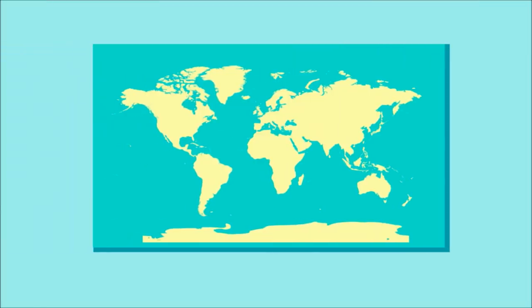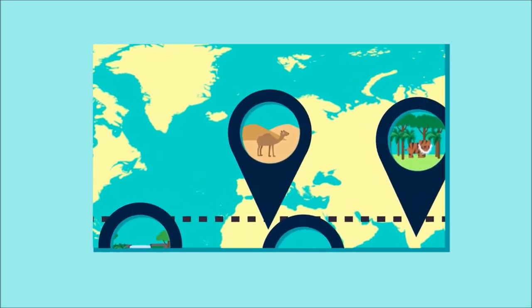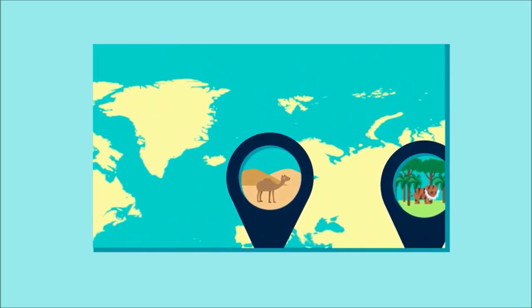In general terms, biodiversity tends to be highest at the equator and decreases at higher latitudes, i.e. as you get further away from the equator.